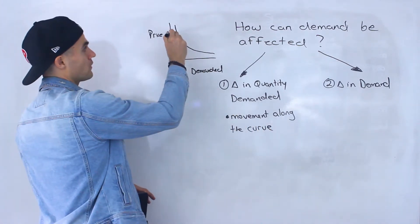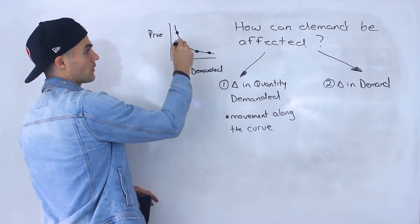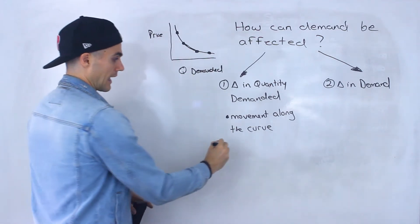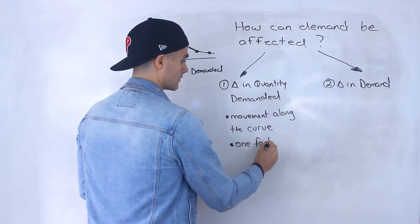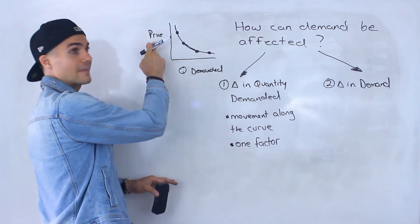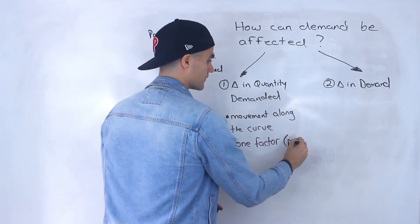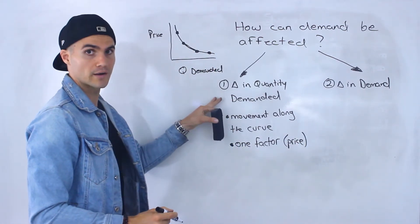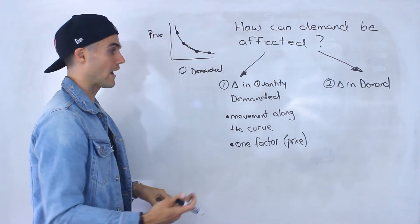A change in quantity demanded is basically movement along the curve — going from one point to another on the same curve. There is only one factor that affects movement along the curve, that change in quantity demanded, and that one factor is price. We'll have a separate video talking about change in quantity demanded — movement along the curve — and dig in deeper on why that happens.